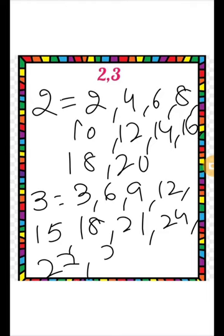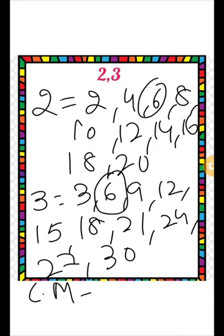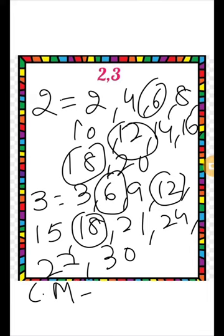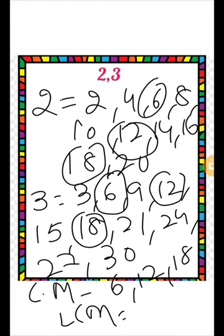Now find the common multiples. The common multiples are 6, 12, and 18. Now we have to write only the least common multiple — the smallest multiple. The LCM is 6.